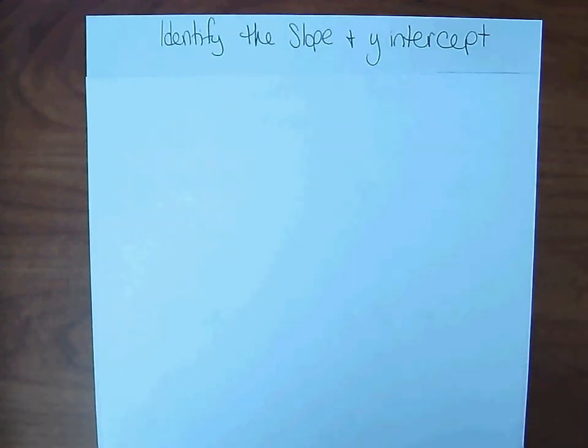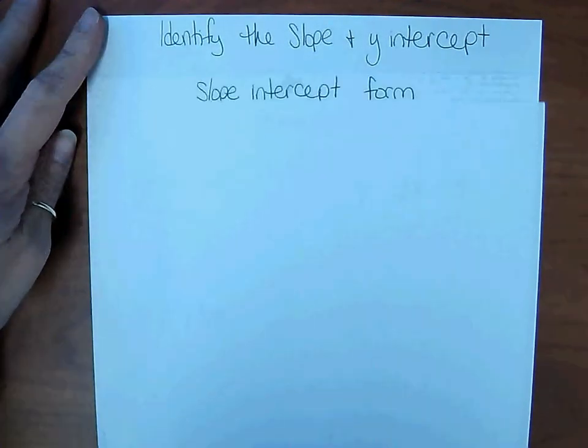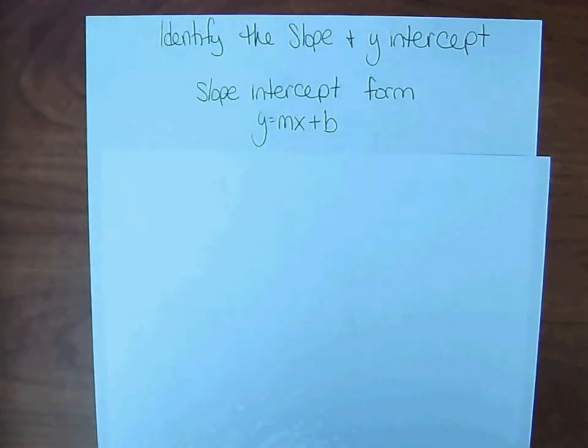Identify the slope and y-intercept. Slope-intercept form is y = mx + b. If an equation is in this form, it is very easy to determine the slope, rate of change, and the y-intercept—the point where the line touches the y-axis.